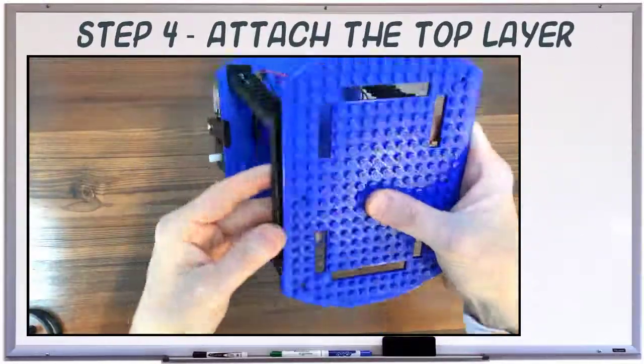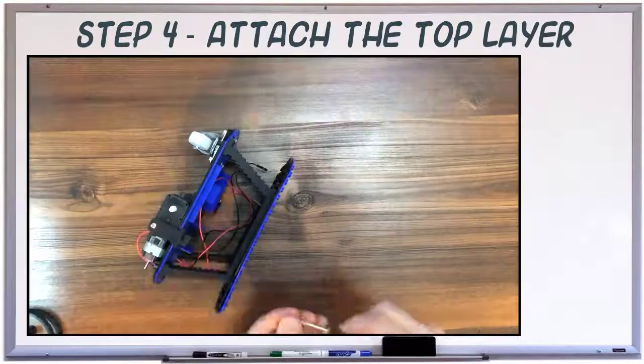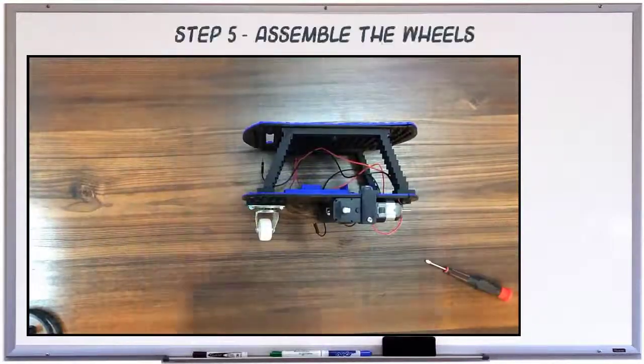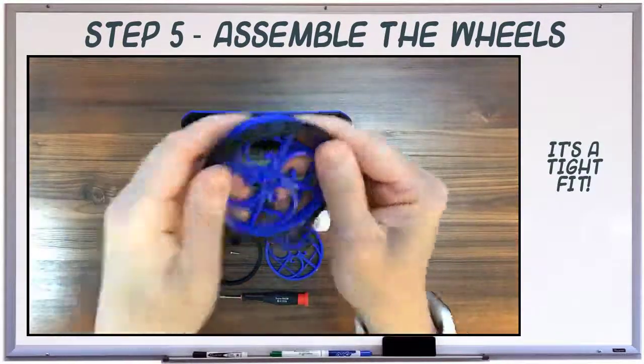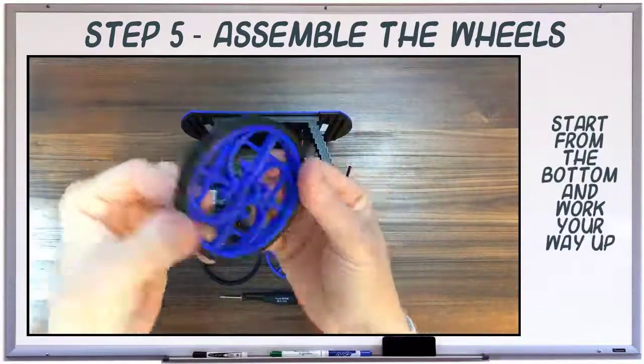The colored and black top pieces fit together and are screwed using the center holes. Snap the black tires into the colored wheels. It works best if you start at the bottom and work your way up.